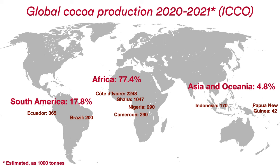About 5 to 6 million farmers grow cocoa, with more than 90% of the world's cocoa beans grown and harvested on small, family-run farms.